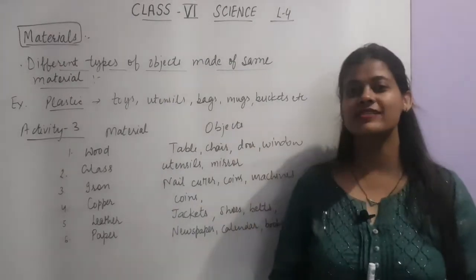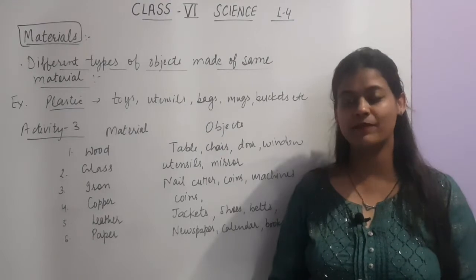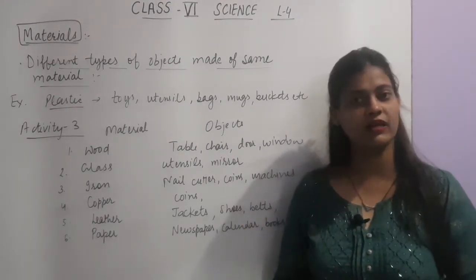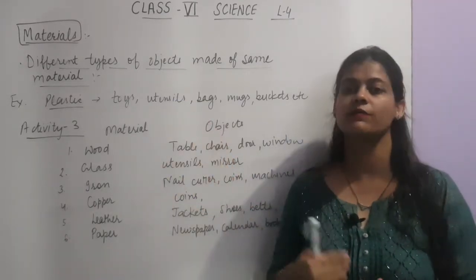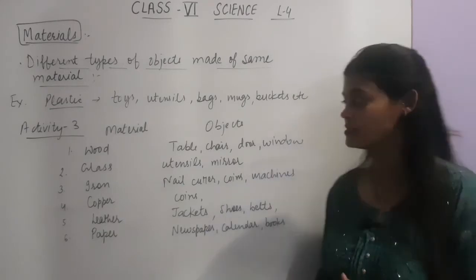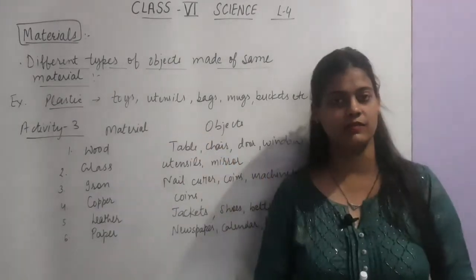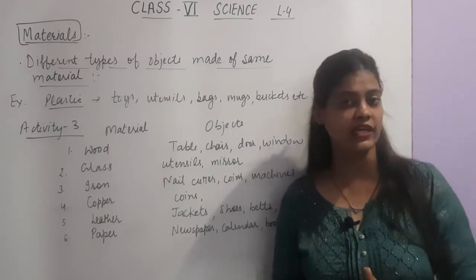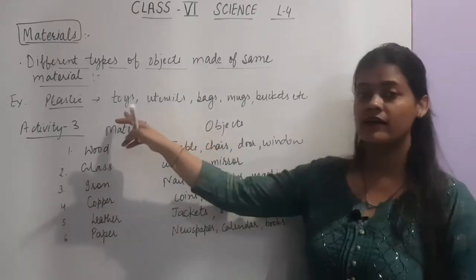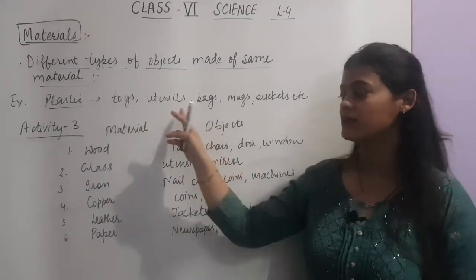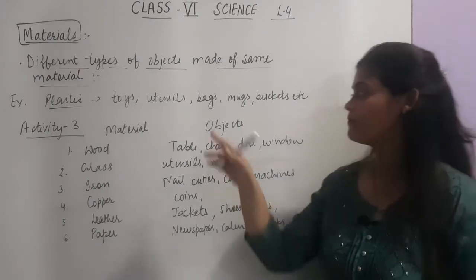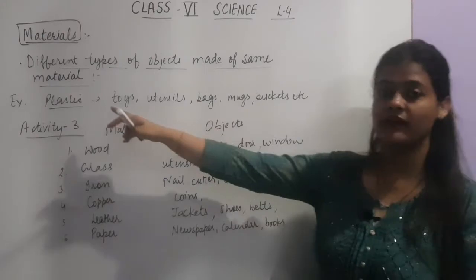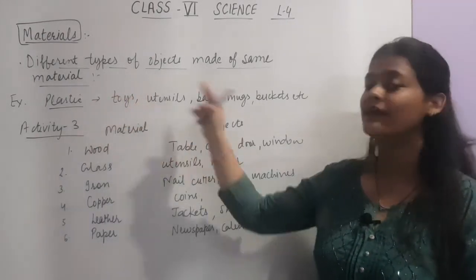The next part is: different types of objects made up of the same material. In the previous part we discussed an object made up of different materials. Here we will see how one material can make different objects. For example, plastic is a material — it is not used to make just a single object; it can make many objects. Plastic can be used to make toys, utensils, buttons, bags, mugs, and buckets. So the same material is being used for making different objects.